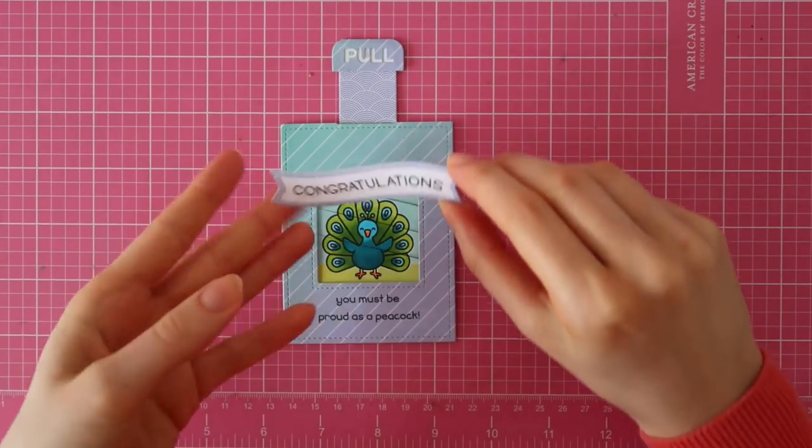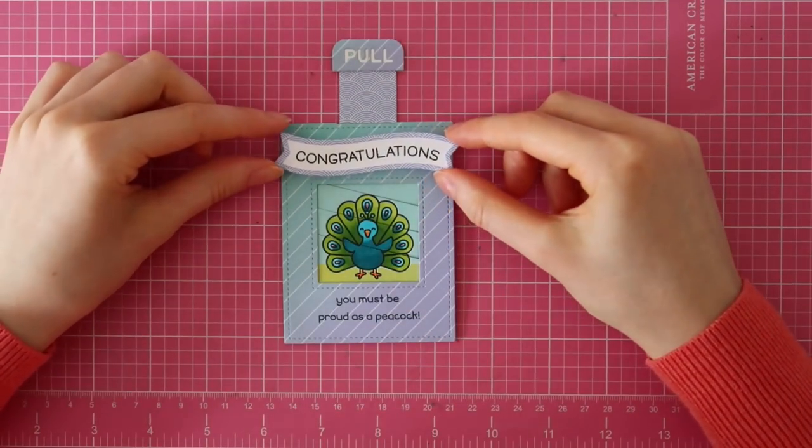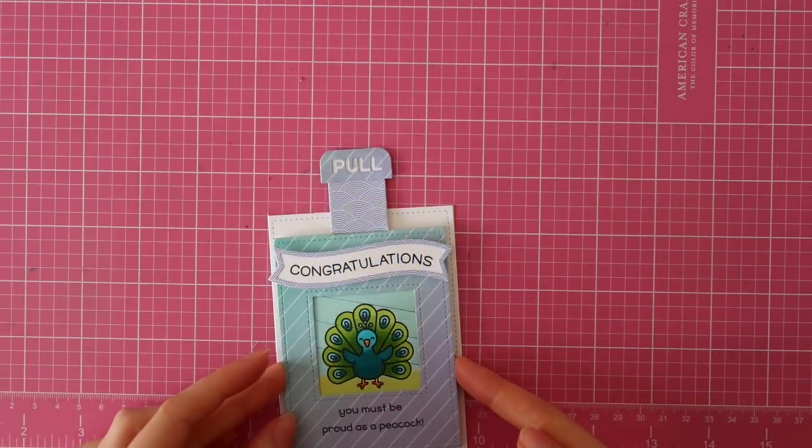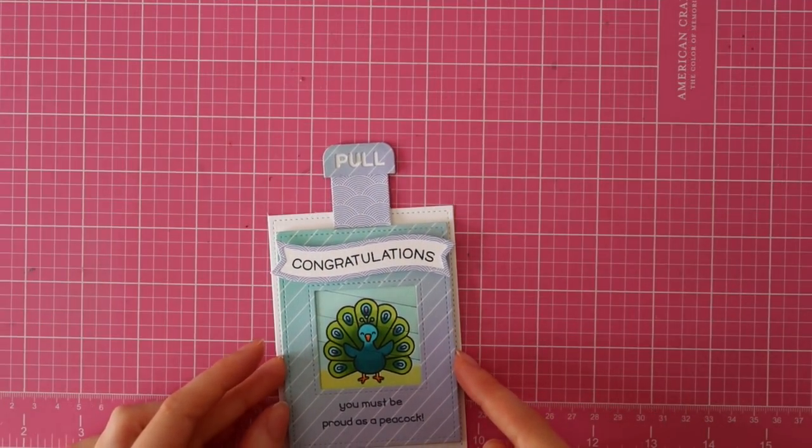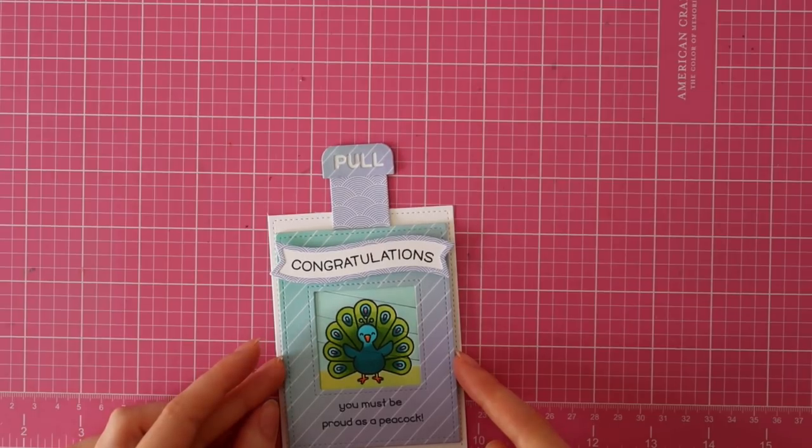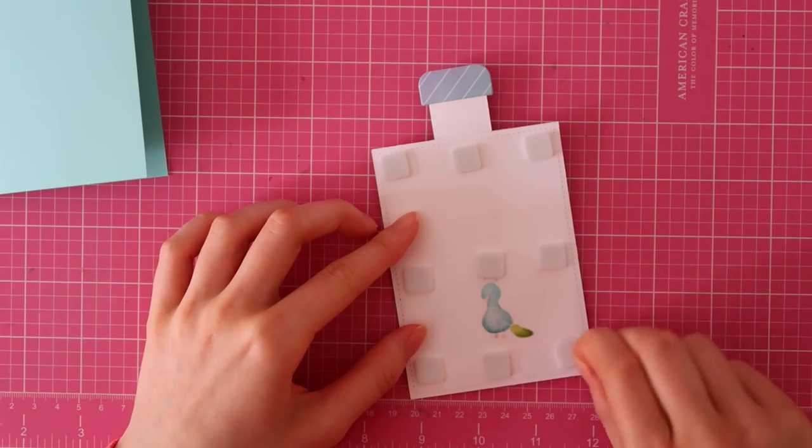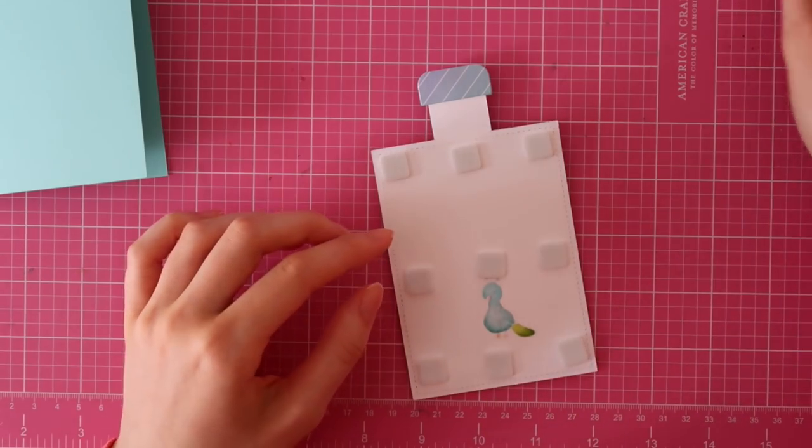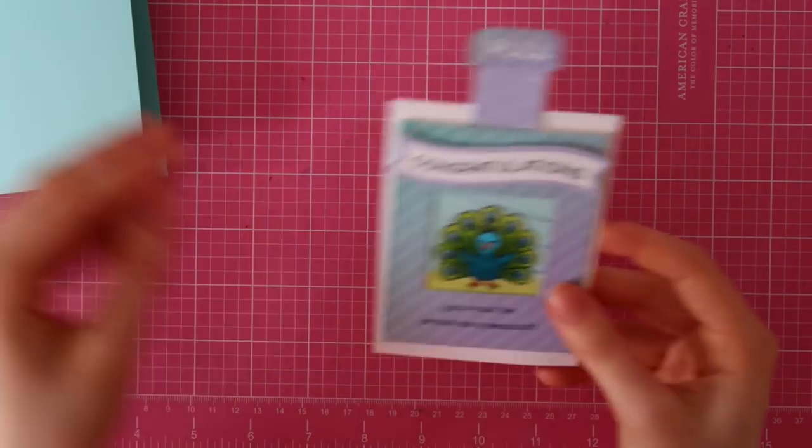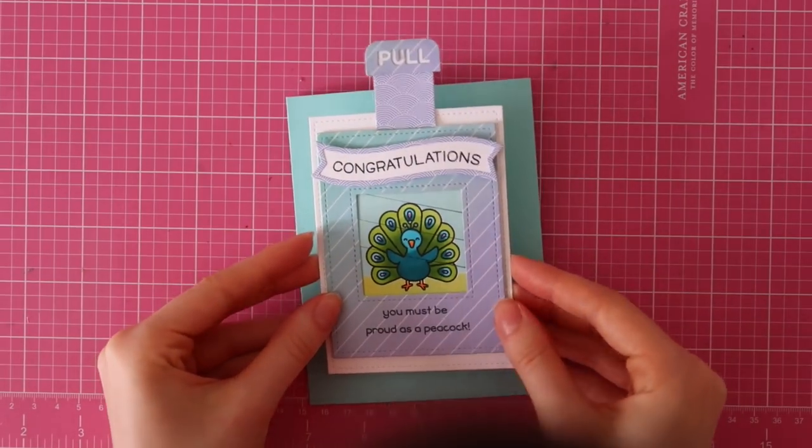I'm adhering my congratulations banner using some foam adhesive, and then I die cut a white rectangle using the Large Stitched Rectangles die cut set from Lawn Fawn out of some white cardstock. I adhered that to my magic picture changer, and then I'm adhering the finished piece with some foam adhesive to a standard size note card.